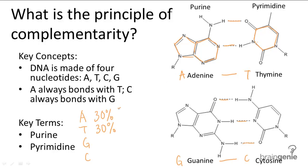Once you add these two together, you have 60%, and you subtract 60% from 100%, because 100% represents the entire DNA strand.